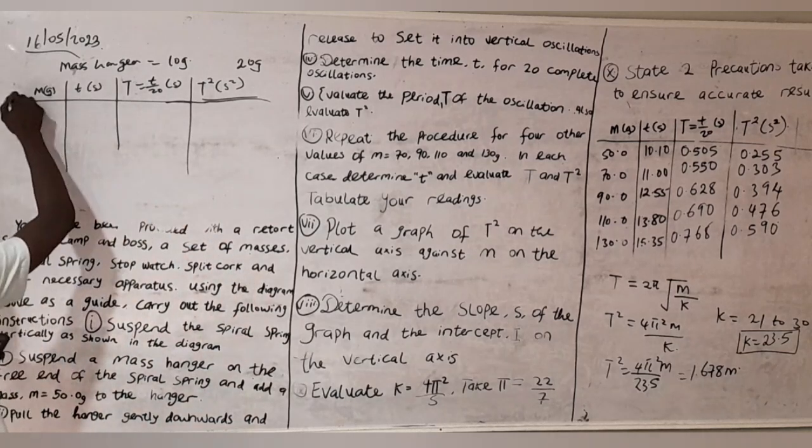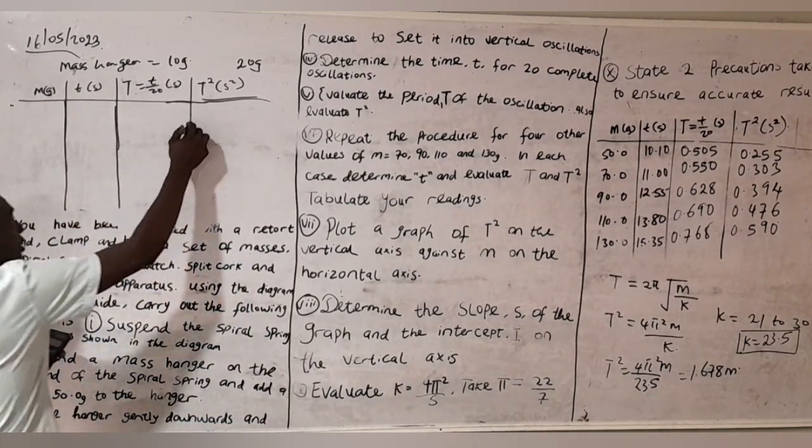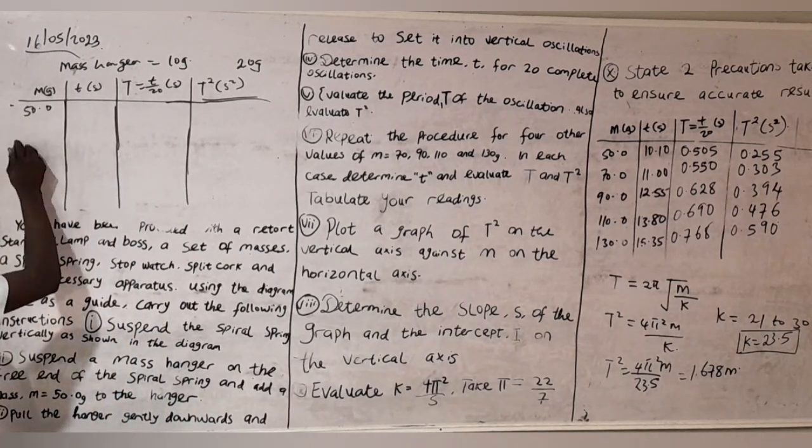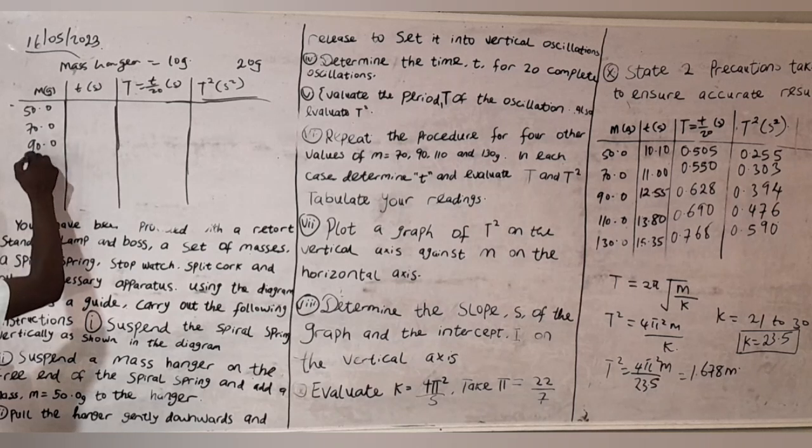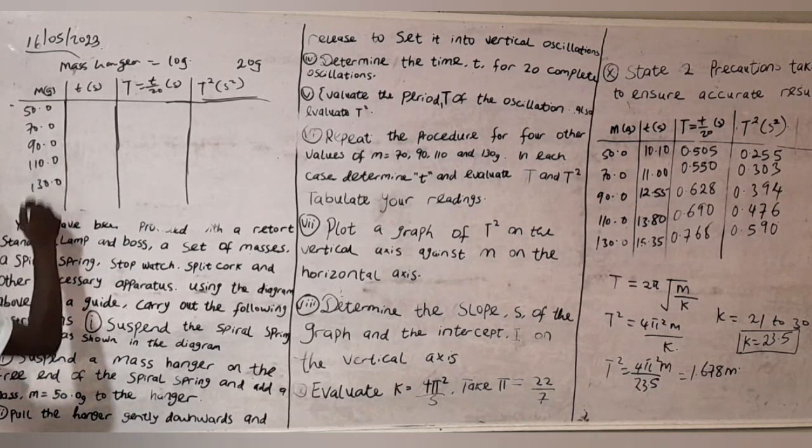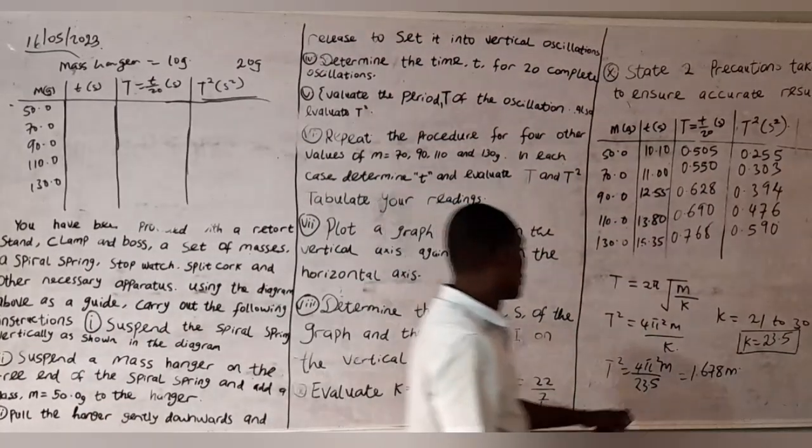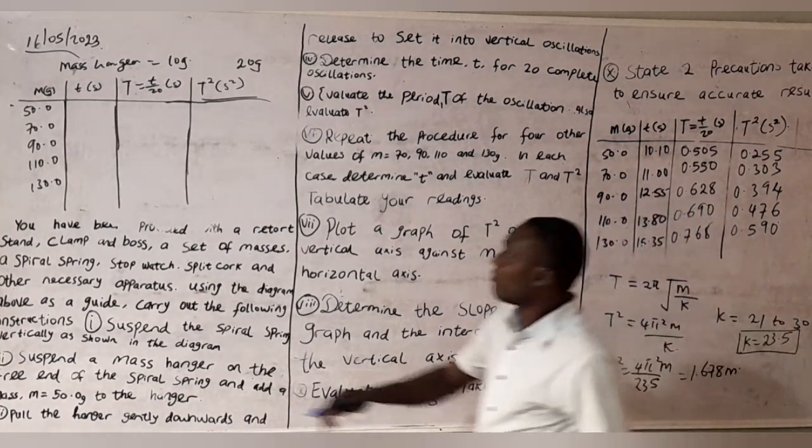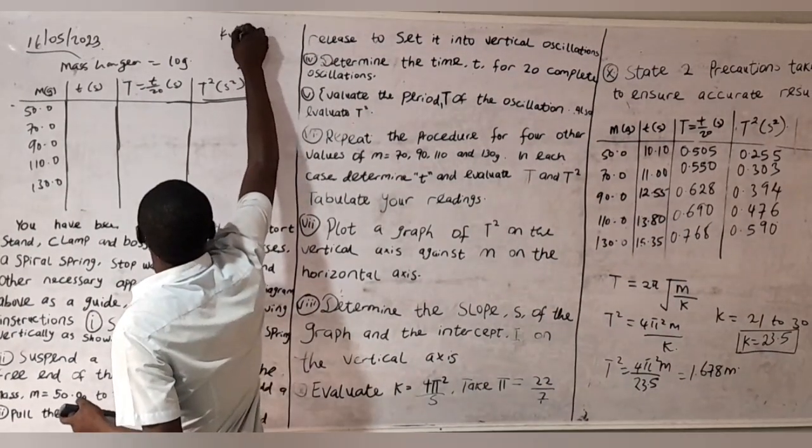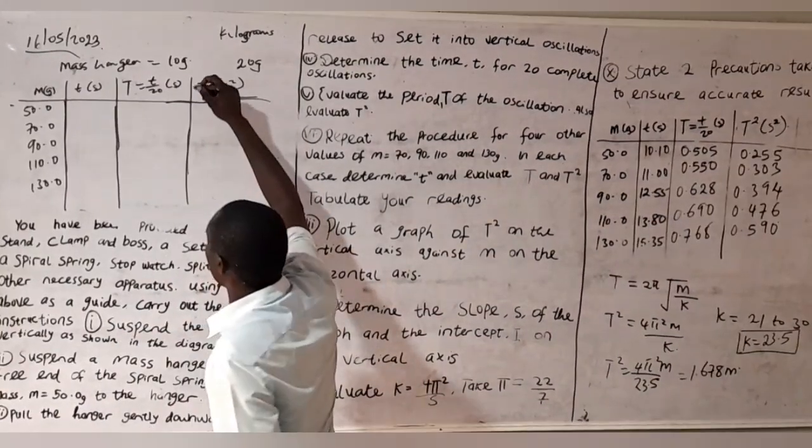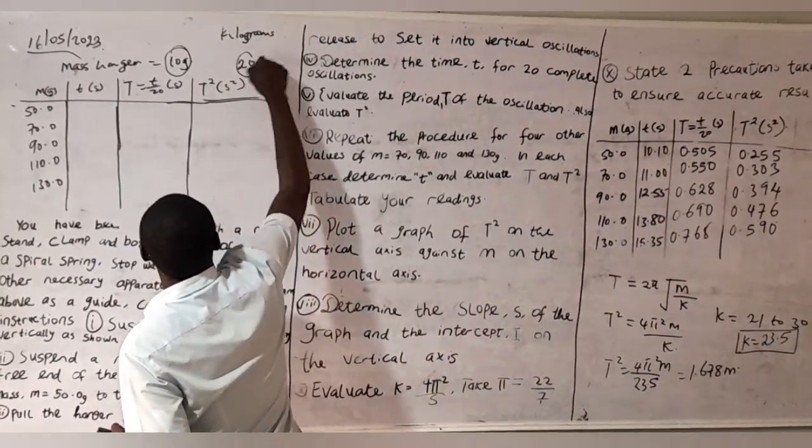What I will just do is this: I'm going to input these values here, the masses - 50.0, 70.0, 90.0, 110.0, 130.0. All you just need to do is to consider the mass here in kilograms. The mass must be in kilograms. You have to consider the mass hanger that you are using.